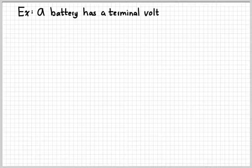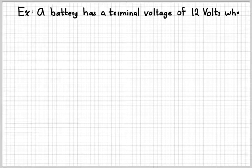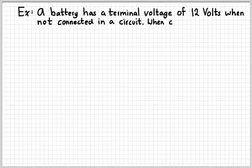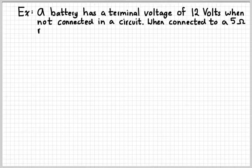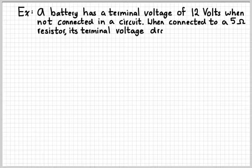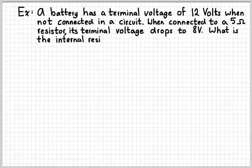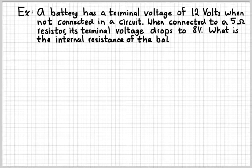So let's look at a quick example. A battery has a terminal voltage of 12 volts when it's not connected to anything. And then we connect it to a resistor. Let's say a 5 ohm resistor. And then we measure its voltage again, and we find that it's dropped to 8 volts. The question is, what is the internal resistance of this battery?